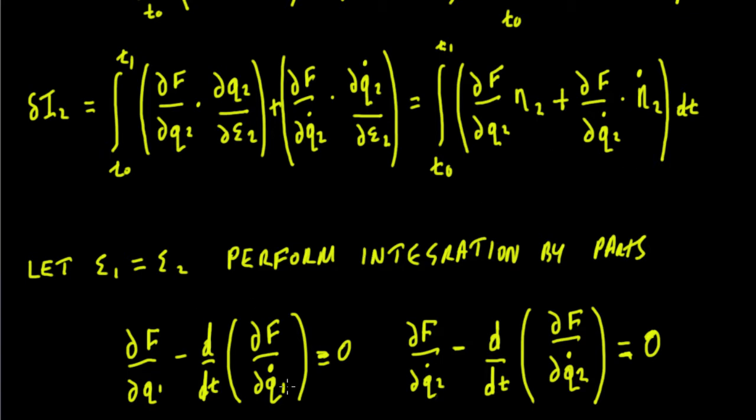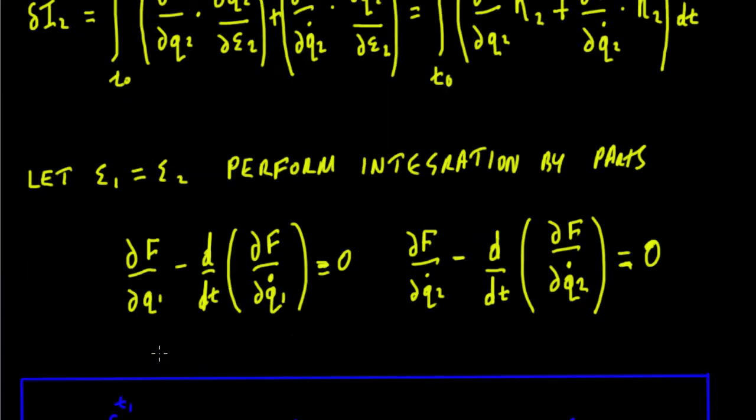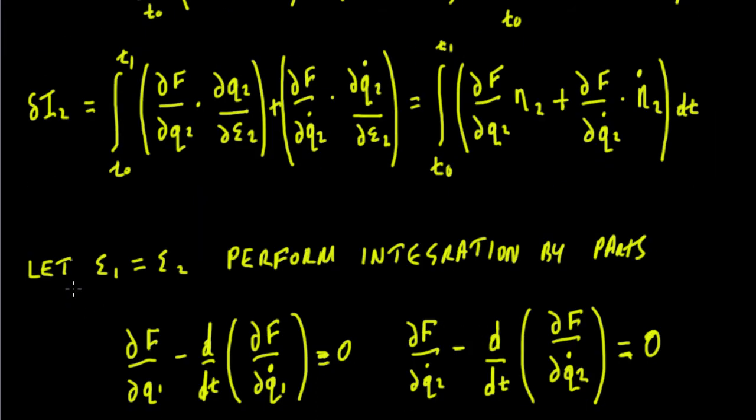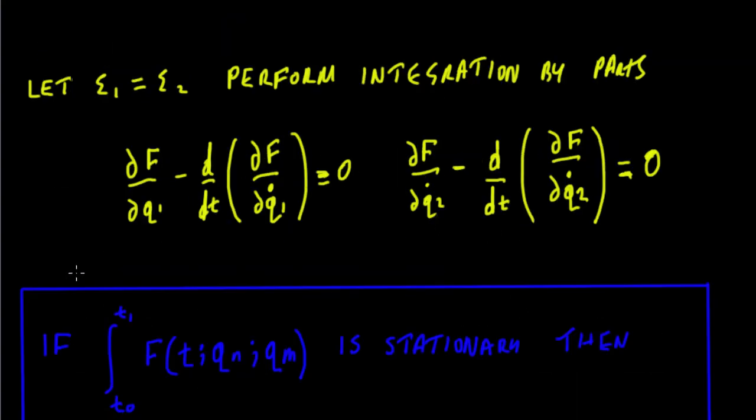Inside the brackets we'll be left with just the Euler-Lagrange equation here. One thing to note here is that we can make an assumption that our value for η for the first variation for the first independent variable is the same as the value of η for the variation for the second independent variable.